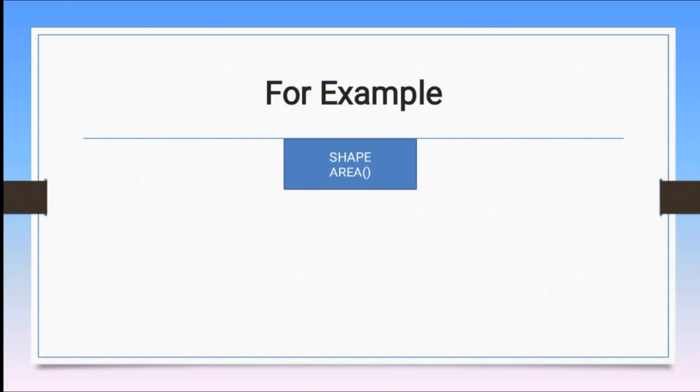For example, we have a class that is nothing but a shape and we have a method called area.